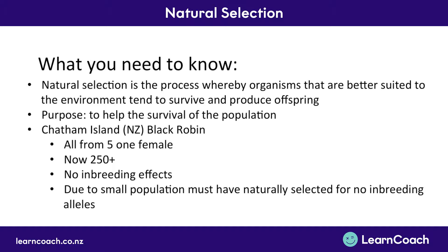The New Zealand example we learned was the Chatham Island black robin. They all came from one female when there was a population of five — four males and one female. Now there are more than 250 and there are no inbreeding effects. Although there may have been genetic drift, an argument is that Blue could have survived due to natural selection because she was one of the few robins that didn't have inbreeding effects, and therefore may have passed that on to her offspring.